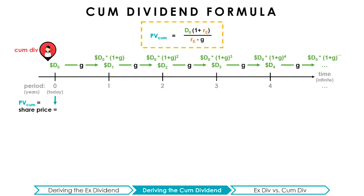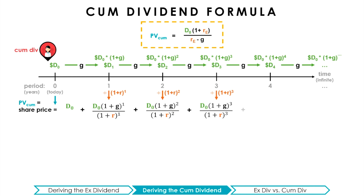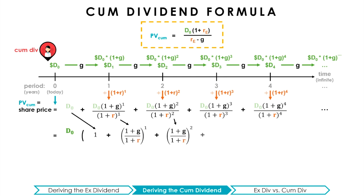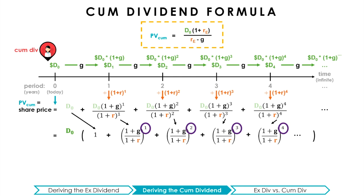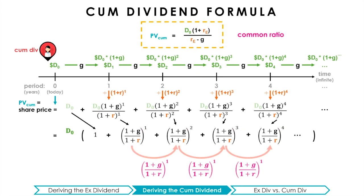With the ex-dividend formula, the first term was D1. But with the cum-dividend formula, we base all cash flows on D0, the dividend we anticipate receiving this period. Just like before, since the stock price reflects the present value of all the dividends, these future dividends are discounted back to today at the cost of equity RE. We can see a pattern: each dividend term is multiplied by (1+G)/(1+R) all to the power of the time period. If we factor out D0, we can more clearly see this sequential pattern.